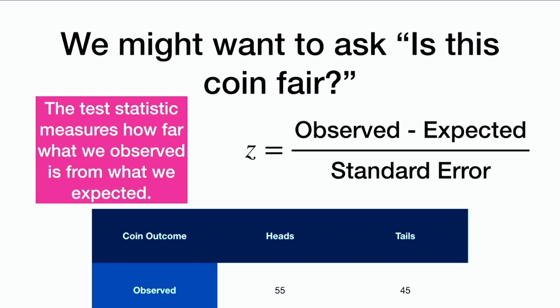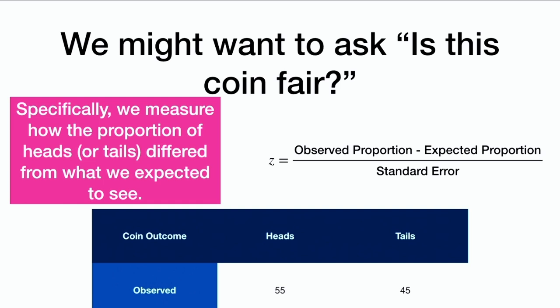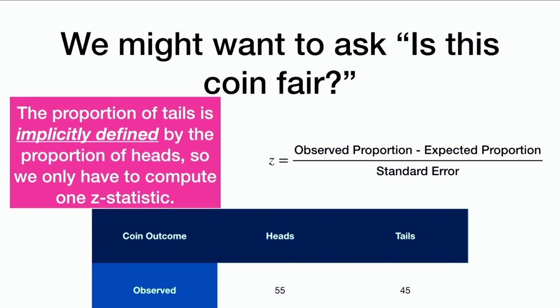We have a test statistic, a z-statistic, which measures our observed minus expected values over a standard error. This test statistic measures how far what we observed is from what we expected — specifically, how the proportion of heads or tails differed from what we expected. We only have to do this for the proportion of heads or tails because the proportion of tails is implicitly defined by the proportion of heads, so we only compute the z-statistic once.